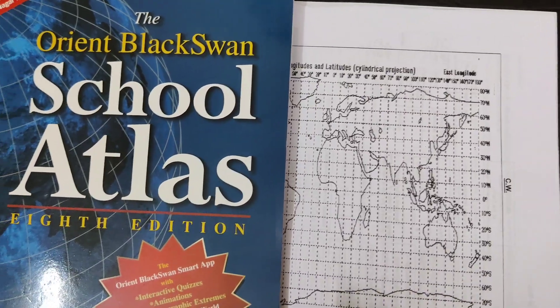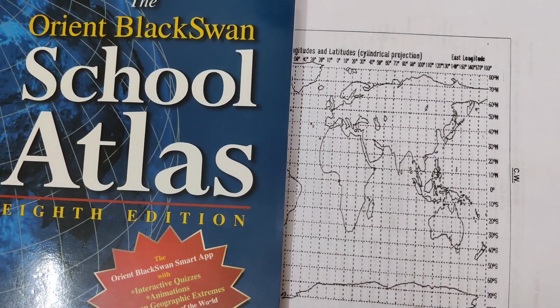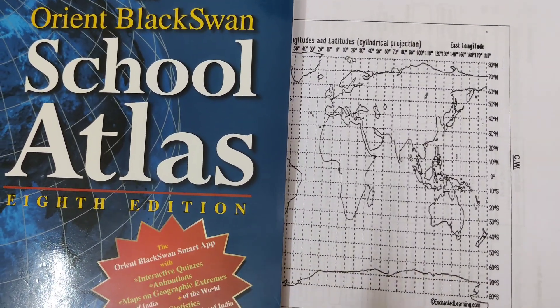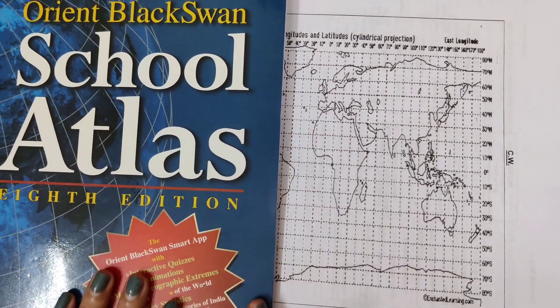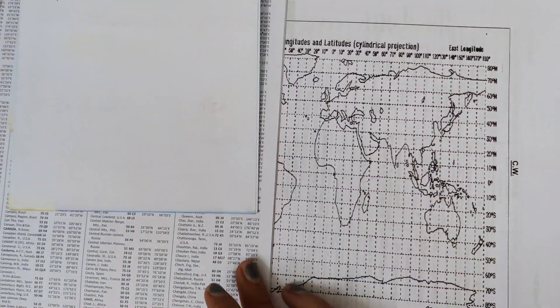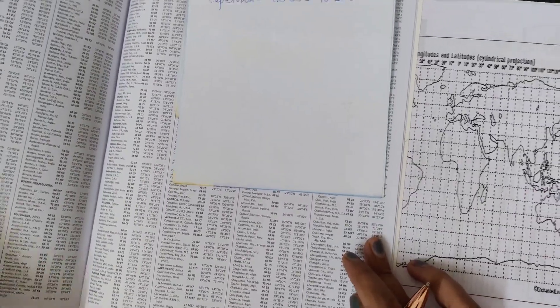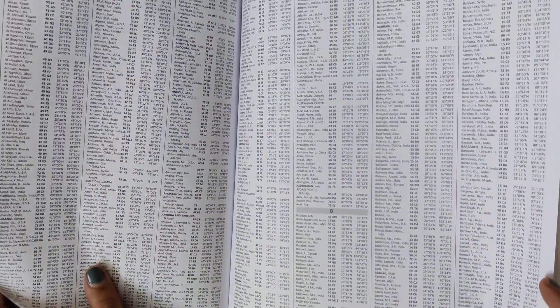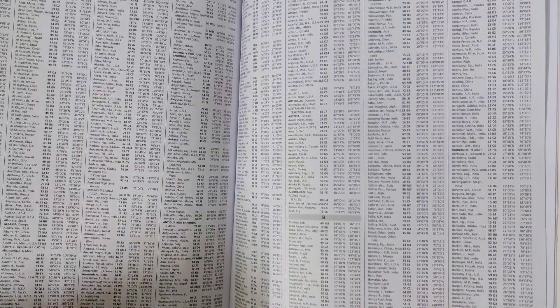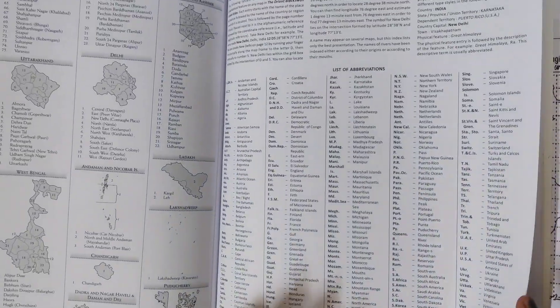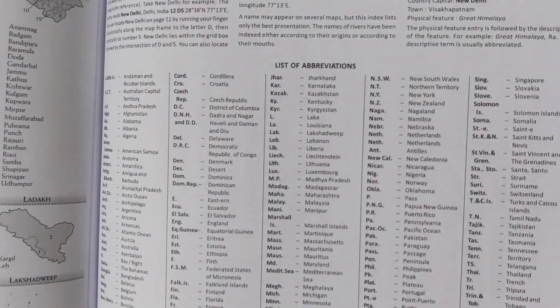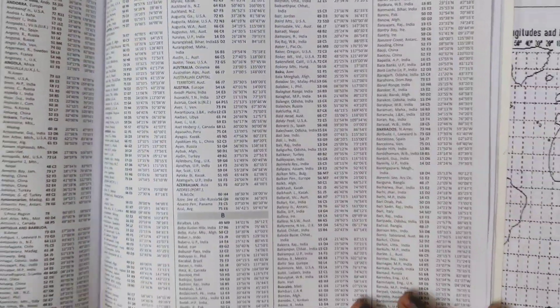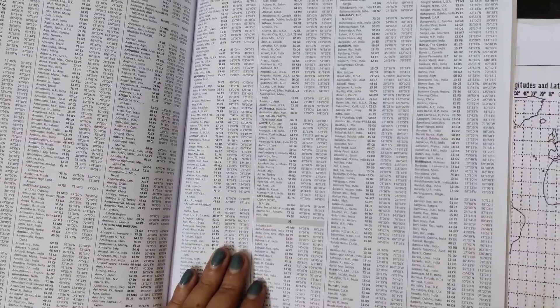For marking different countries on the grid, you need an atlas. The last page of the atlas has the country's latitudinal and longitudinal values. To mark the exact location of any place, you need the latitude and longitude of that place.